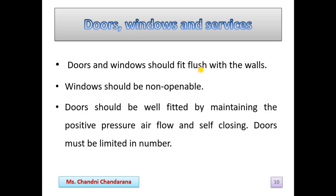Sinks and drainage must be excluded from the area where aseptic processes are performed. Gas cylinders should also be excluded, and all gas should be piped from outside the area. Light sources in the clean rooms are fitted with the ceilings to reduce dust collection and avoid disturbance of airflow.